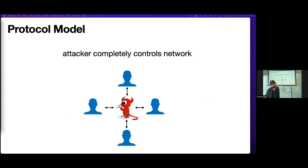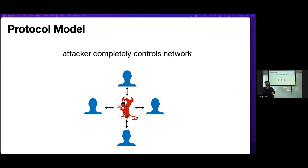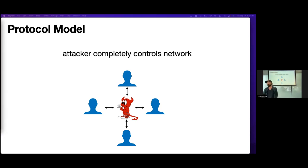Here's a basic model for these protocols. There's a bunch of parties over a network, and you assume the attacker controls the entire network. If Alice wants to send a message to Bob, she can't do so directly — she has to give the message to the adversary and hope it delivers it to Bob. The adversary is allowed to leak the message, modify it, do deep packet inspection — the most pessimistic network model possible.